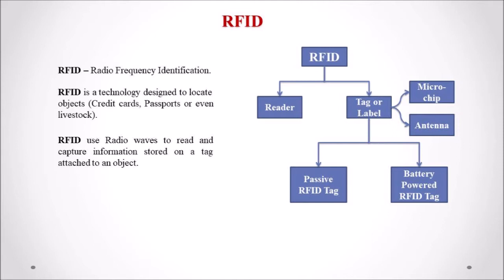The tag does not need to be in direct line of sight of the reader to be tracked — similar to a QR code scanner, which can scan a code from any position, even upside down. RFID is made up of two parts: a reader, which is similar to a barcode scanner, and a tag or label where data about the object is stored.